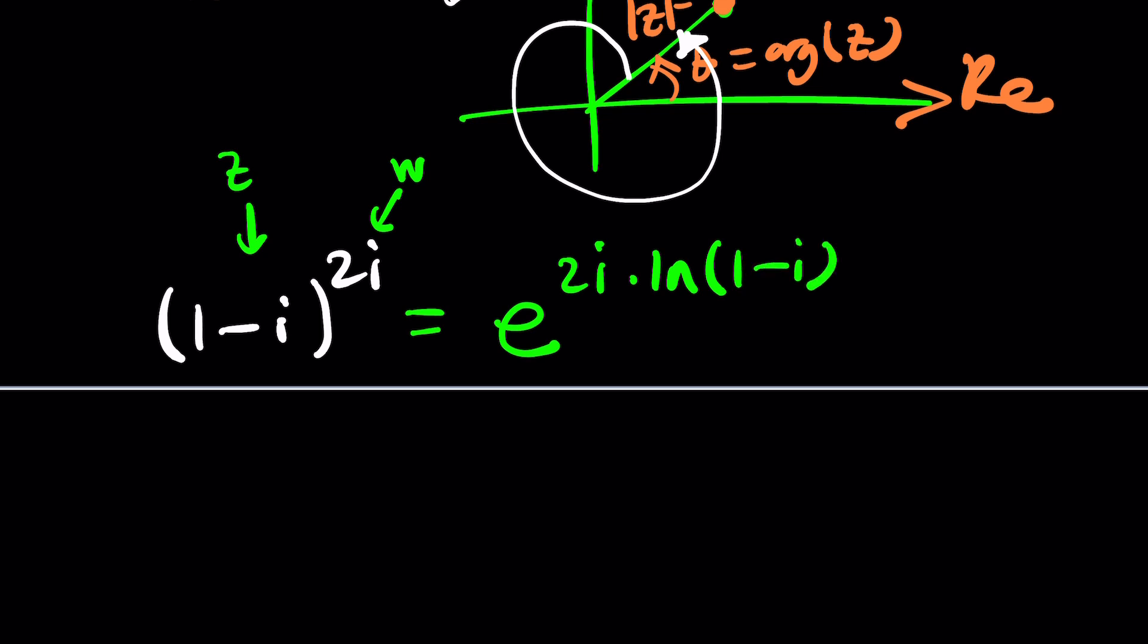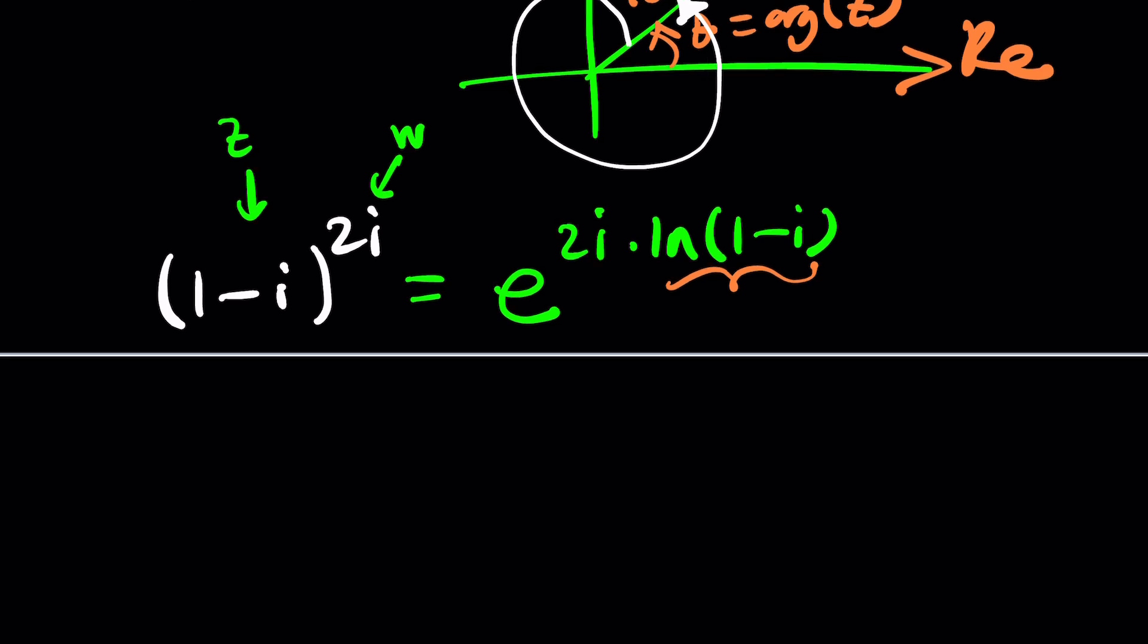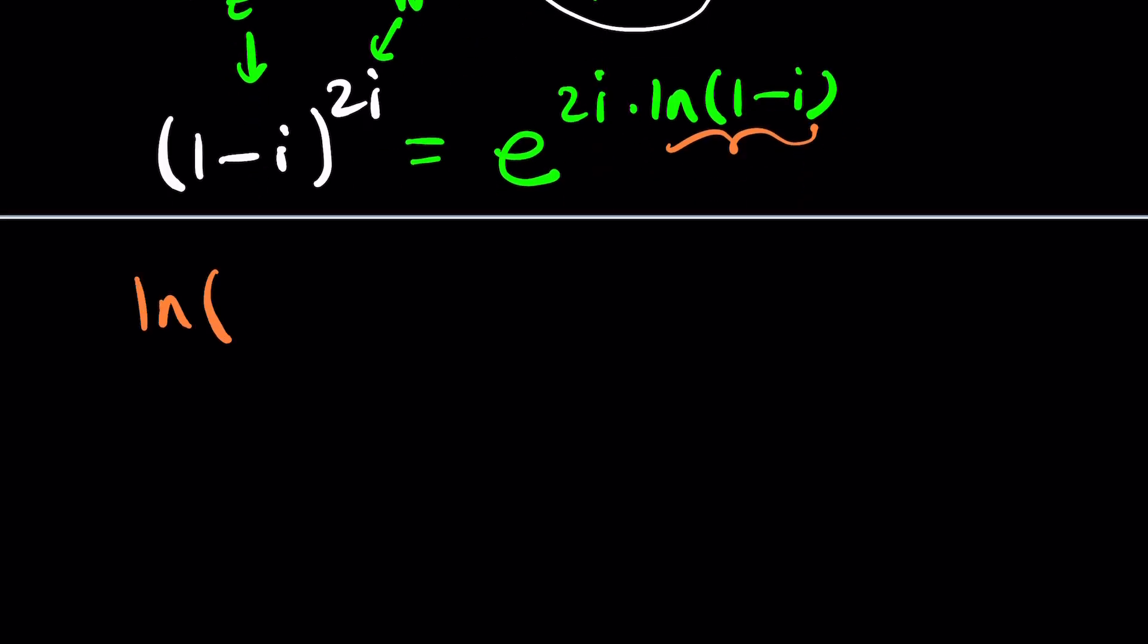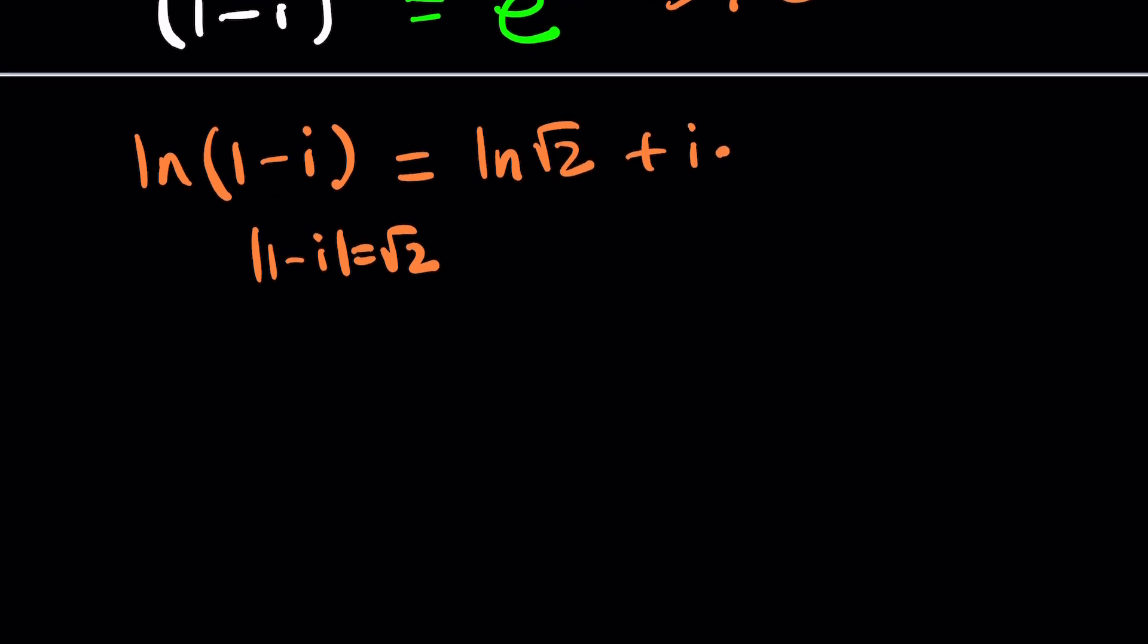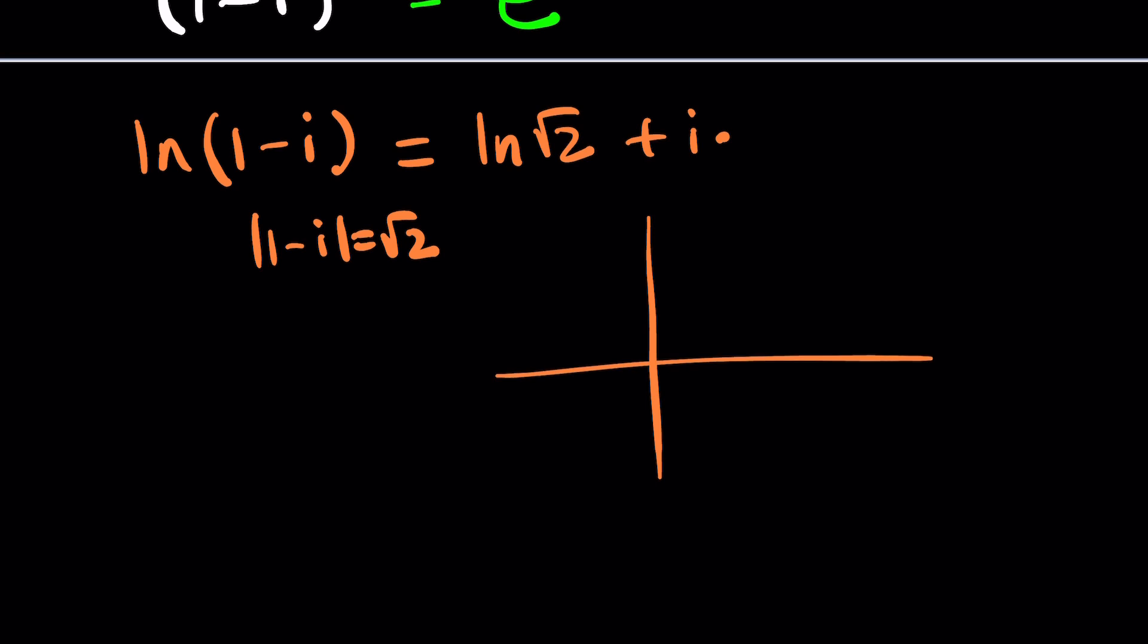Sorry if I scared you. But ln 1 minus i can be written as ln absolute value of this number. Absolute value of 1 minus i, as you know, is the square root of 2. You should know this. The square root of a squared plus b squared from the Pythagorean theorem plus i times, okay, how do you write the angle, right? Let's talk about it.